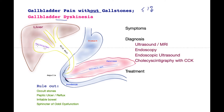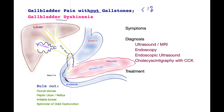The gallbladder makes synchronized contractions to expel the stored bile down into the bowel tube. The bowel tube then continues with these contractions to propel the bile down toward the small bowel. All of this happens in a fairly synchronized manner.